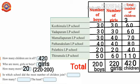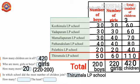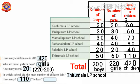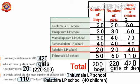Next question: in which school did the most number of children join? Tirumala LP school — 110 children joined. In which school did the least number of children join? Yes, Palatira LP school, because only 40 students joined in this school.